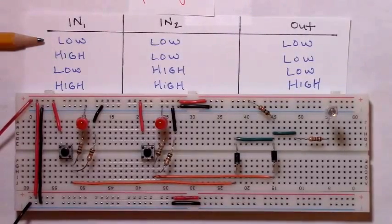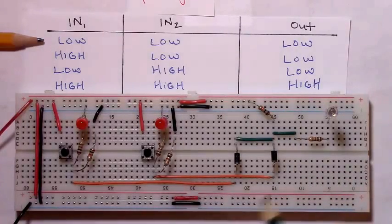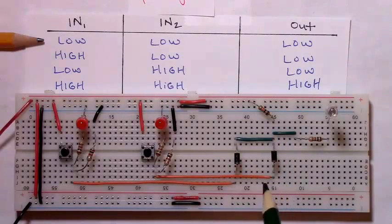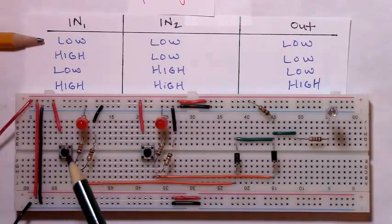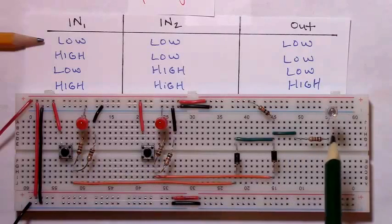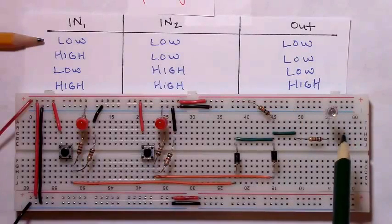Welcome to another circuit assembly tutorial. In this video we'll be building an AND gate circuit that's centered around the behavior of two diodes, as well as some accessory components: two momentary buttons for our first and second inputs, as well as an LED for an output.